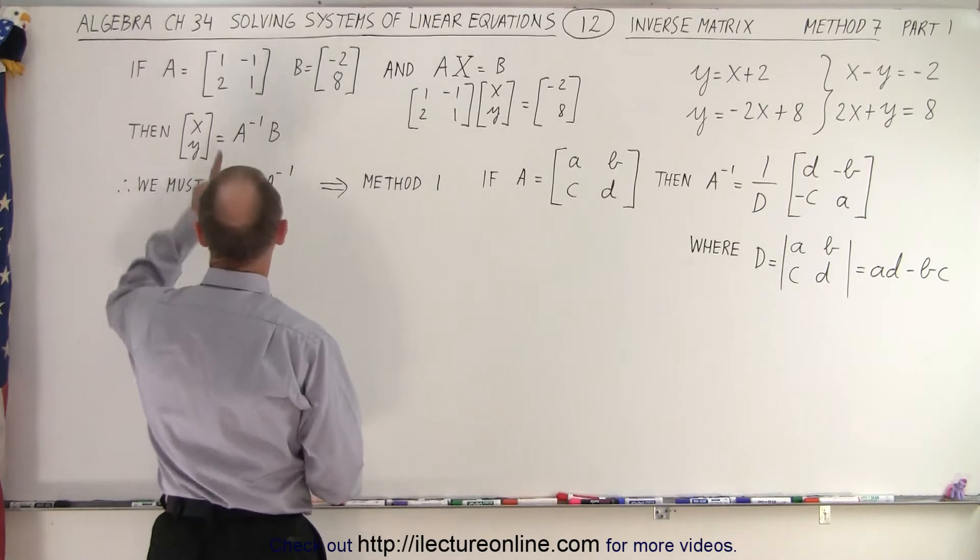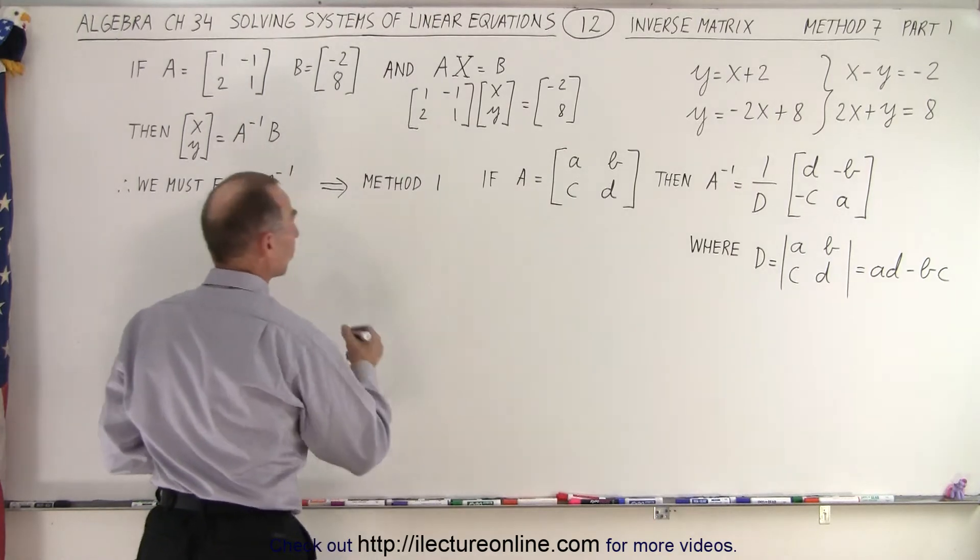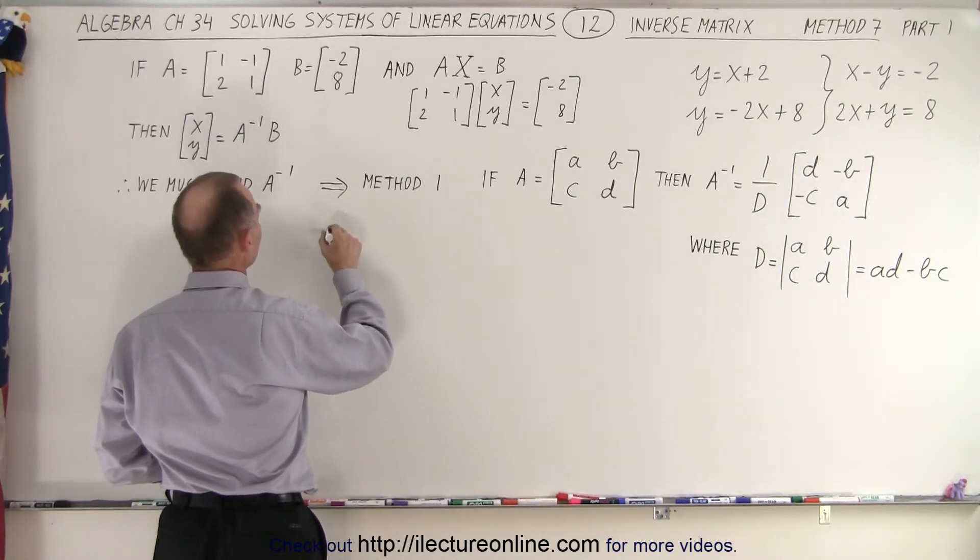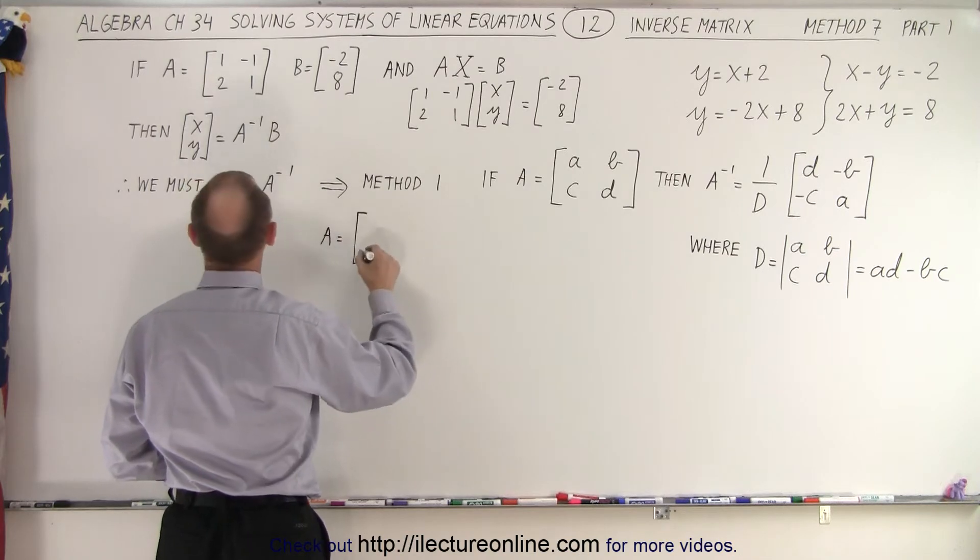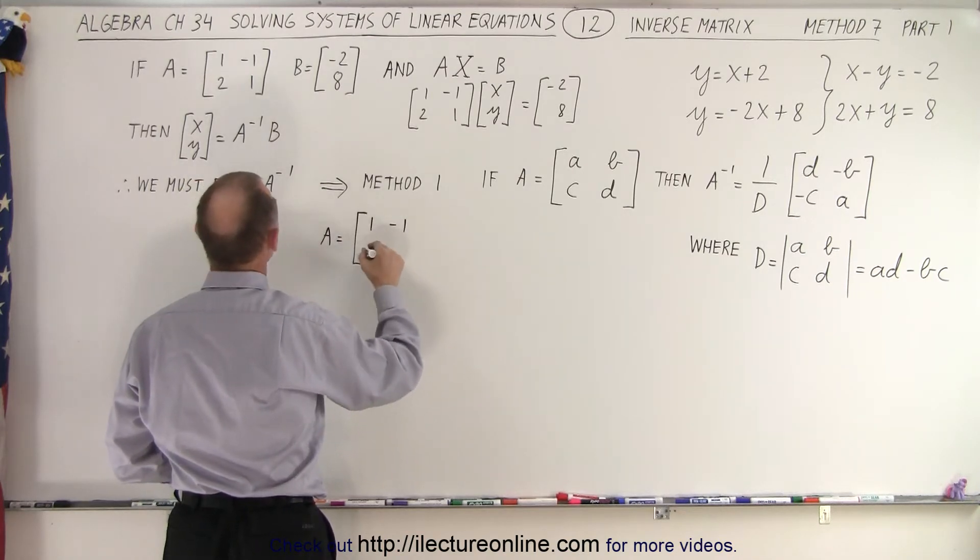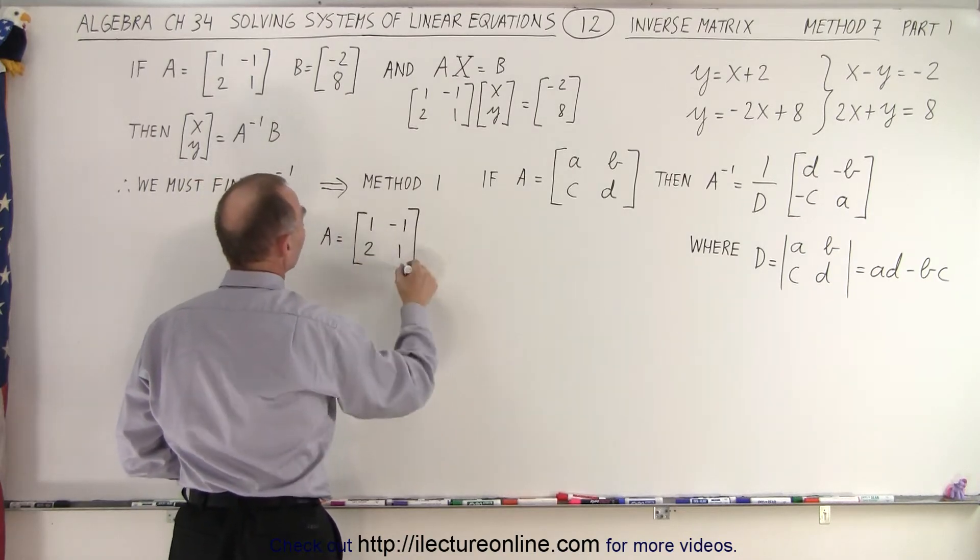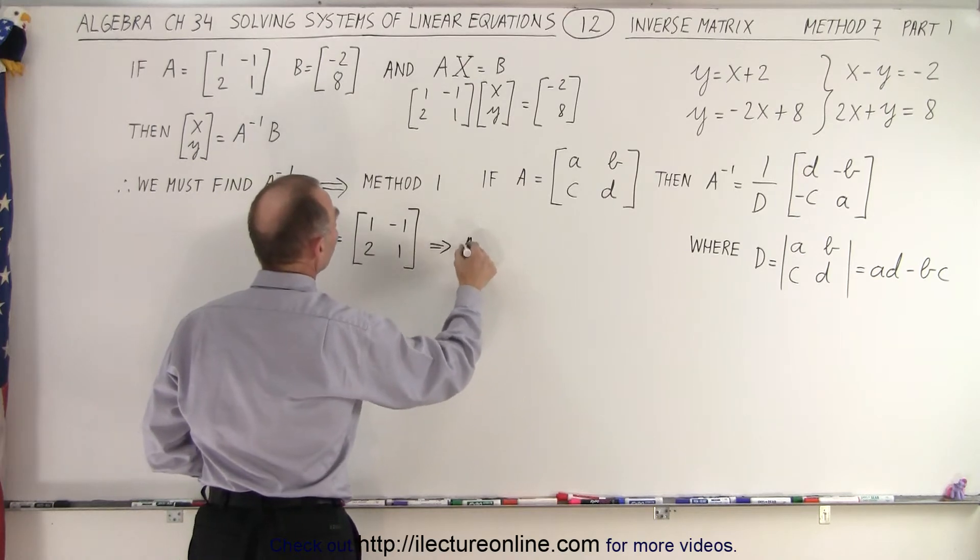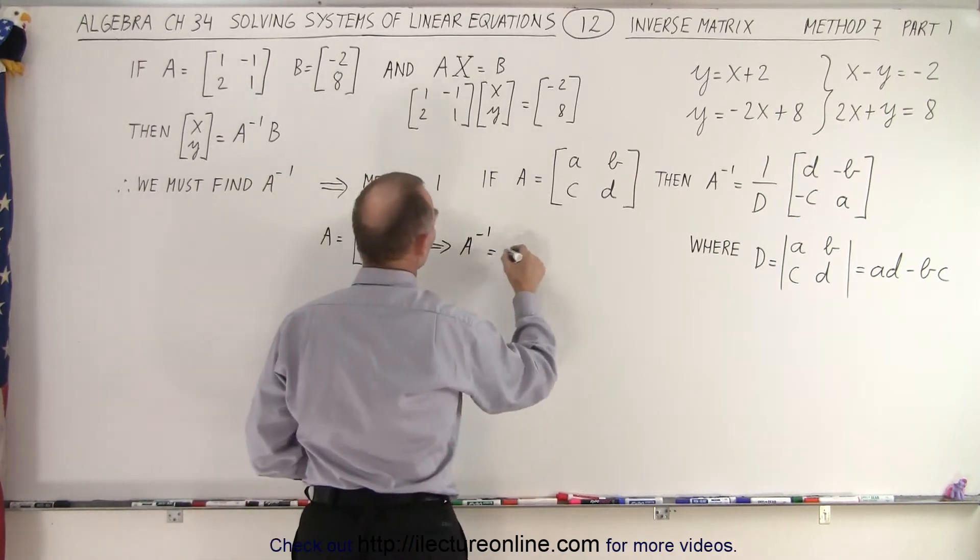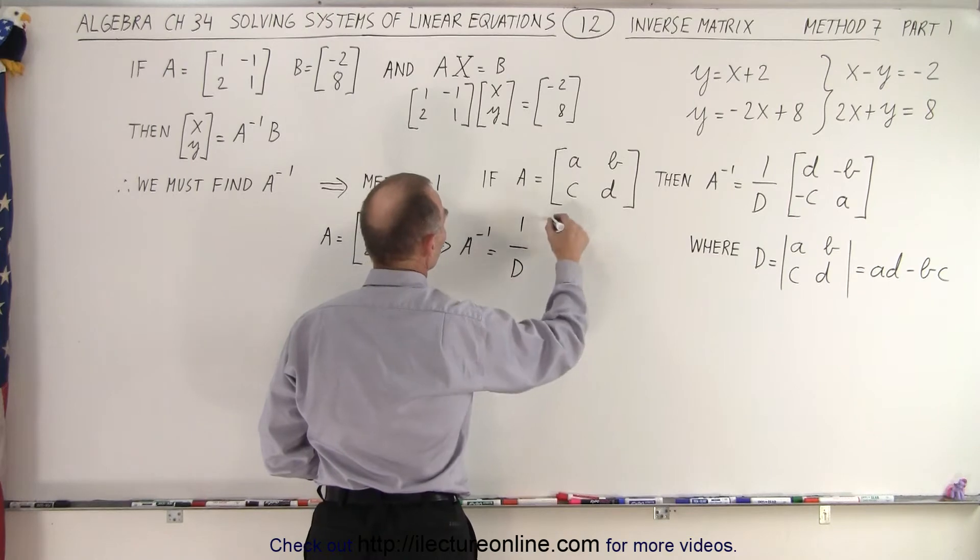So first of all, we have A. So we can say that if A is equal to 1, negative 1, 2, and 1, then we can say that A to the minus 1 is equal to 1 over the determinant times,